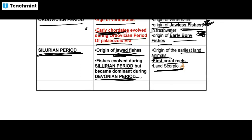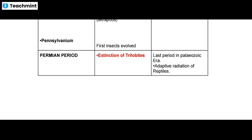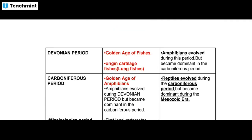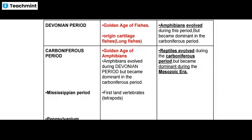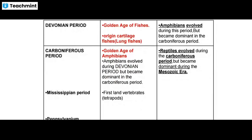Fishes evolved during the Silurian period but became dominant in the Devonian period — that is the third and fourth period. The Devonian period is known as the golden age of fishes.